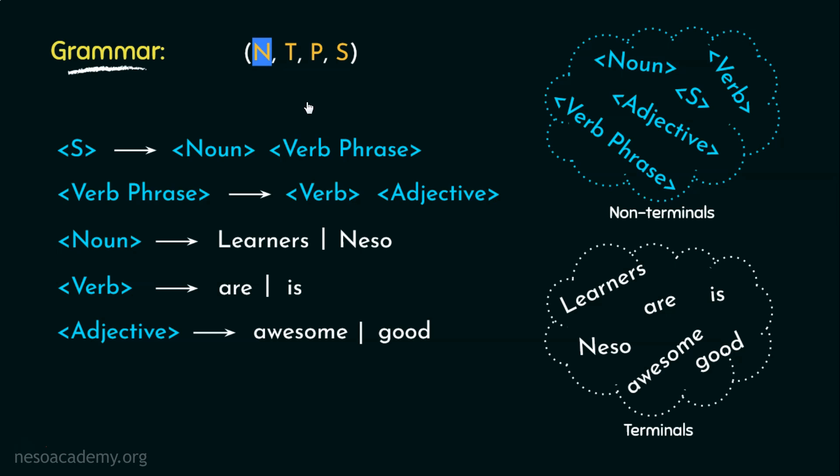Where N denotes this collection of non-terminals. T specifies this particular collection of terminals. Thereafter, P is this specific set of rules which will help in the production of sentences, which is nothing but the strings of terminals, like learners are awesome.